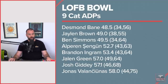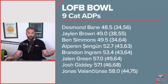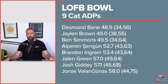Jalen Brown had an ADP of 49 with a highest of 38 and a lowest of 55. Ben Simmons snuck into the top 50 at 49.5, with a highest of 34 and a lowest of 64. On many other sites he's going in the 80s — these guys here are either convinced of what I said is good value or they're just sharper than what's going on on those other sites. It's a big discrepancy.